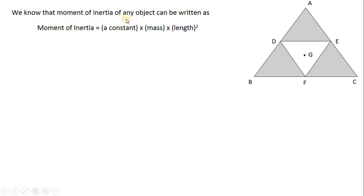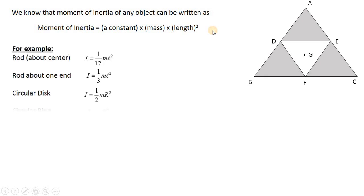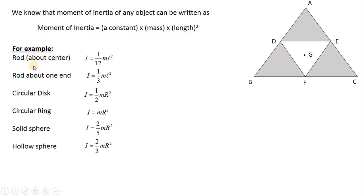We know that the moment of inertia of any object can be written as a constant times mass times length squared. For example, the moment of inertia of a rod about its center is (1/12)ml², so the constant is 1/12. For a rod about one end, it is (1/3)ml², where 1/3 is the constant.